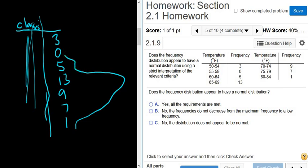And then 0, and then 3. So using a very strict interpretation of the normal distribution, this is not bell-shaped. So I would say that no, it does not appear to be normal.